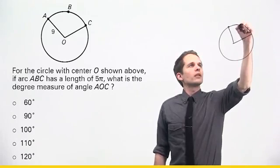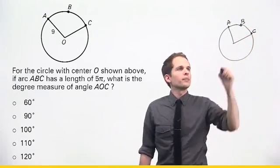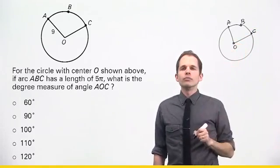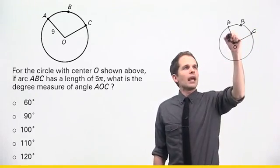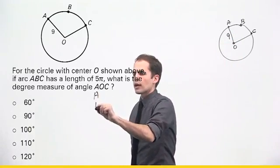So it gives me three points, A, B, and C. That forms an arc. It tells me that the center is O. It also tells me that AO is 9. Okay, so I'll set up some room for process of elimination.